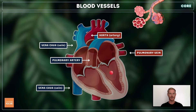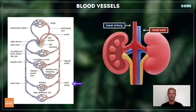The blood then moves down into the left ventricle, which contracts, forcing it into the aorta and off to the body's tissues. Each kidney receives blood from a renal artery. When the blood has been filtered, it's returned to the vena cava through the renal vein.